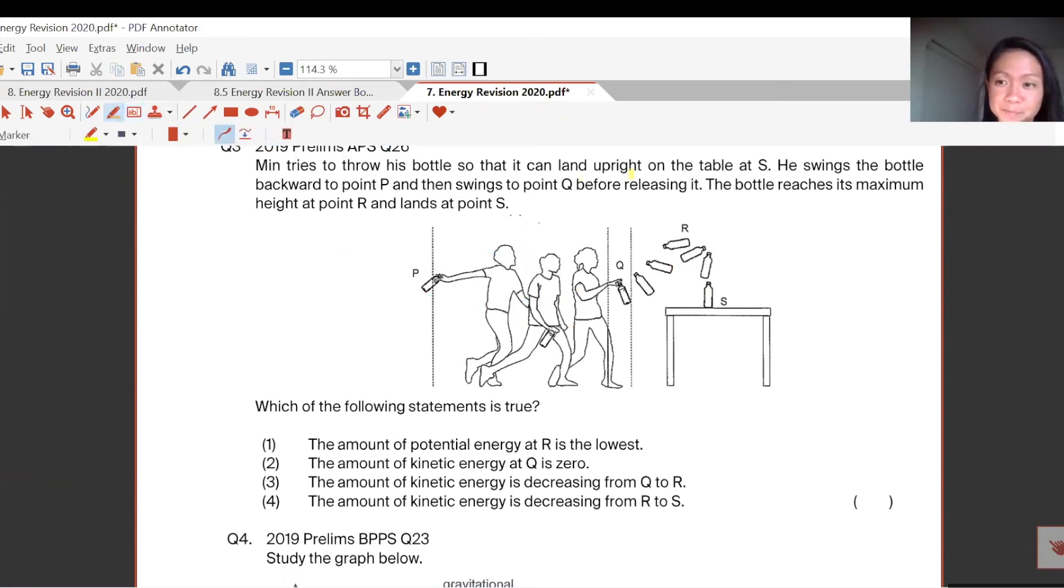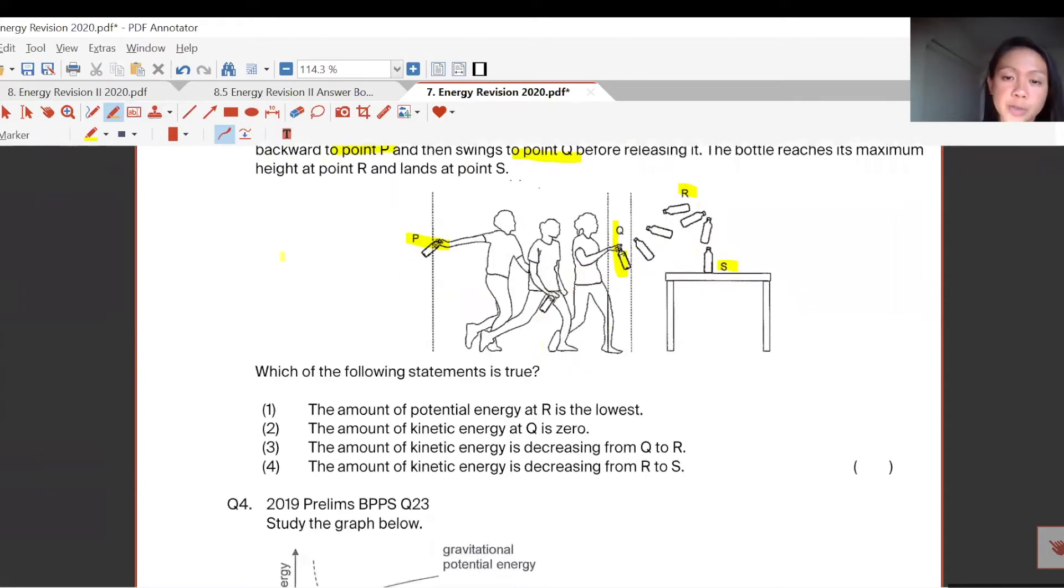Okay, let's see. He swings the bottle backward to point P, then swings to point Q before releasing it. Basically, starting from here at P, then point Q, then it goes up, flies up to the top, then goes down on the table at S. As you can see,